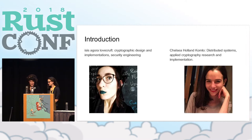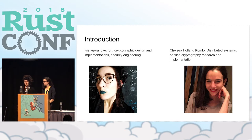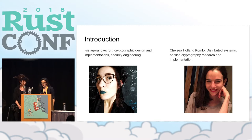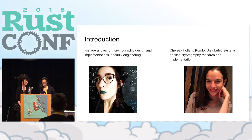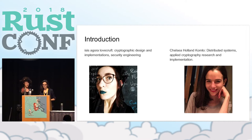I'm Isis. I do cryptographic design and implementations, often in Rust, and I also do security and privacy engineering. I worked for the Tor project from 2010 to last month in July 2018. And I'm Chelsea. I have worked on distributed systems and applied cryptography, and I do research, design, and implementation on the intersection between distributed systems and cryptography.